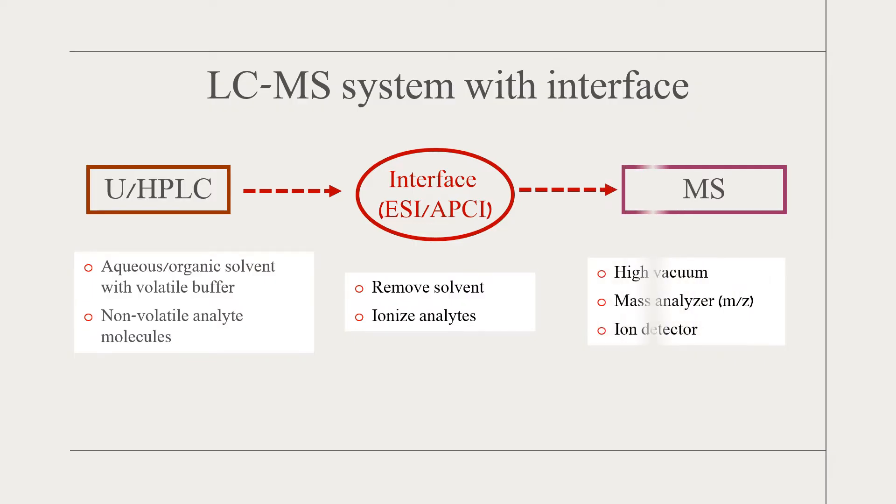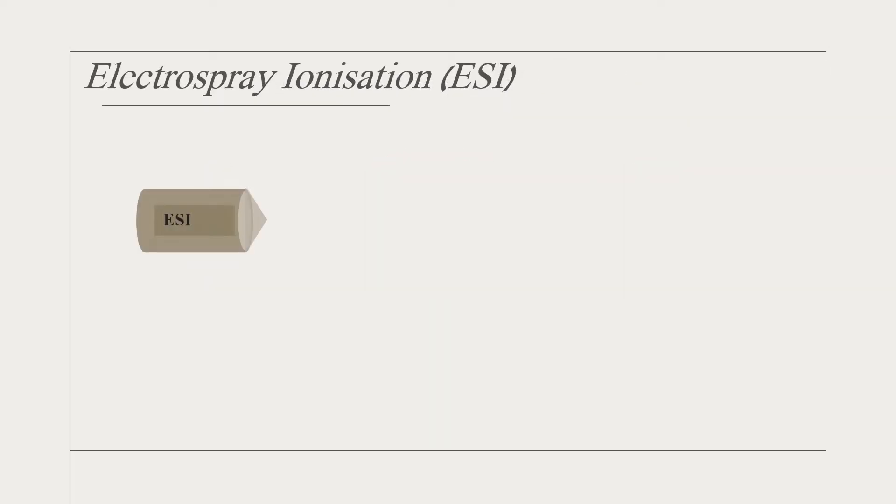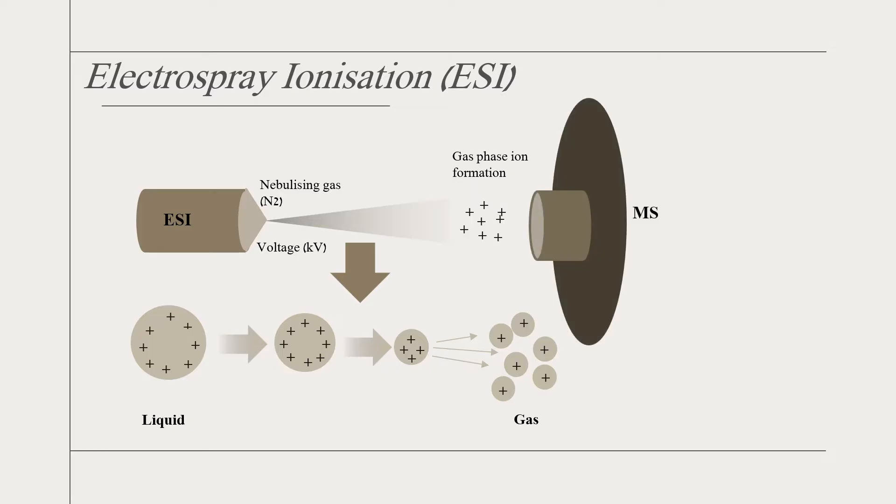Electrospray ionization, or ESI, is the commonly used interface in various LC-MS systems. With a nebulizing gas and high voltage, liquid mobile phase from LC produces an aerosol. In ESI, organic molecules and droplets of the aerosol are converted to protonated ions. The ions are separated from the droplets due to Coulomb repulsive force, and then the gaseous ions are introduced into the vacuumed MS system. Normally, ESI does not cause fragmentation of organic molecules and is called soft ionization.